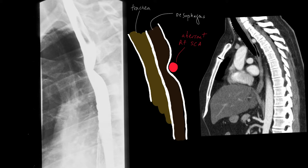You can see that this matches the sagittal CT in a patient who has an aberrant right subclavian artery. Here's the esophagus. Here's the trachea. And here's the aberrant right subclavian artery which goes posterior to the esophagus.